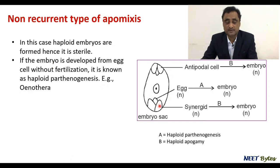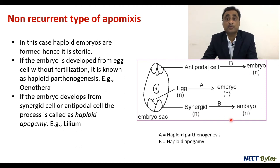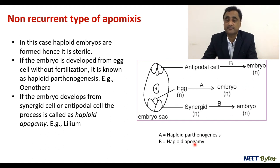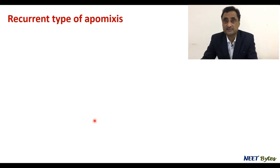Secondly, it may happen that the antipodal cell or synergid cell directly develops into an embryo without any fertilization — this is what we call apogamy, or haploid apogamy. Apogamy means the development of sporophyte from gametophyte, because the antipodal or synergid cell is the gametophyte and the embryo is the sporophyte. The resultant is haploid, so we use the term haploid apogamy. A typical example is Helium where this is observed. Since the product is haploid, it cannot further participate in seed development — that is why it is called the non-recurrent type.